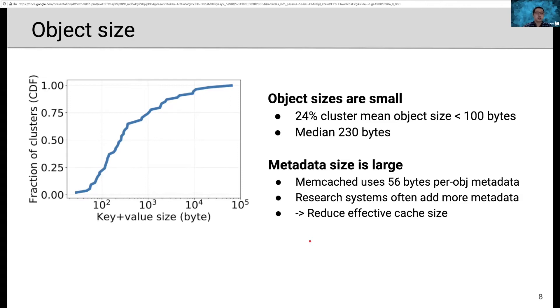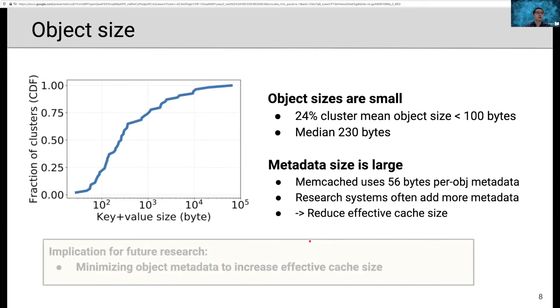While research systems which aim to reduce miss ratio often add more metadata. And adding more metadata to build better eviction algorithms sometimes leads to the opposite result because adding more metadata reduces the effective cache size. So therefore, we suggest that for future research on reducing miss ratio, researchers should also seek ways to minimize object metadata as one way to increase effective cache size and reduce miss ratio.